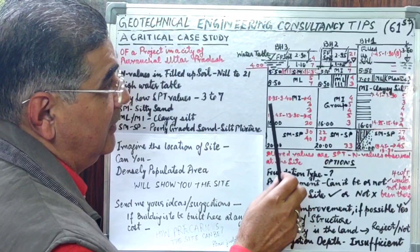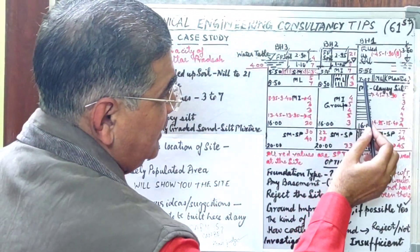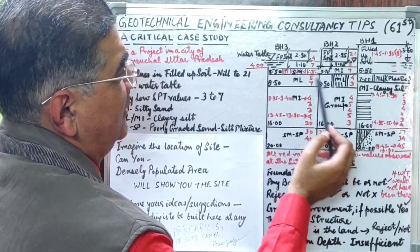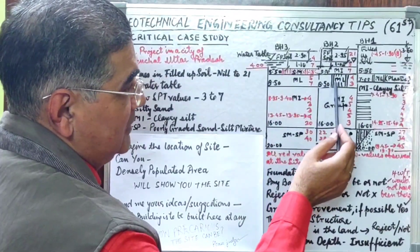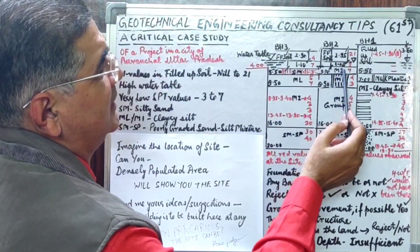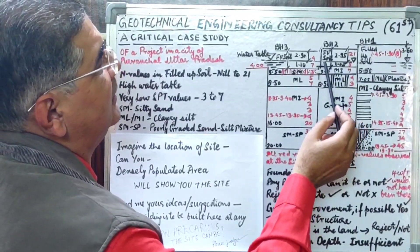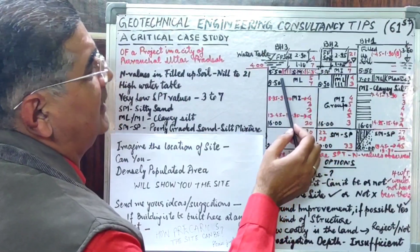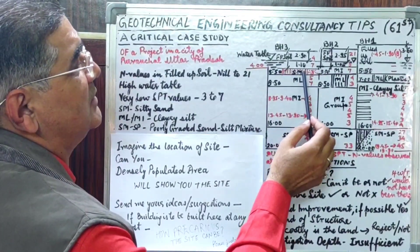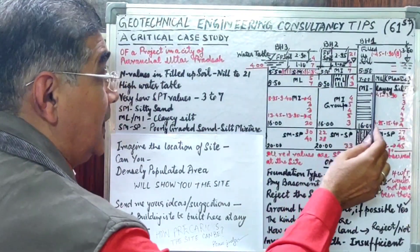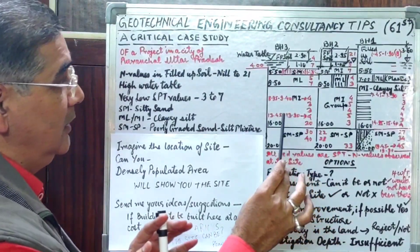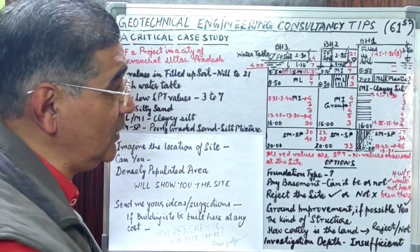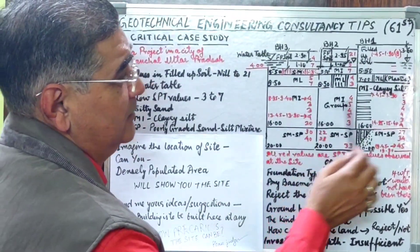Below the filled-up soil, we met ML clay and plastic-type soil from 5.5 to 7 meters in borehole 1 and from 5.5 to 8.5 meters in borehole 2. In comparison, at the same depth — from 4 to 5.5 meters below ground — SC and SM group soils were found. After that, the stratigraphy was almost the same: from 7 to 16 meters in borehole 1 and 8.5 to 16 meters in boreholes 2 and 3, we encountered MI group soil with very low SPT N-values ranging from 3 to 5.